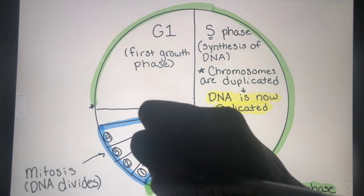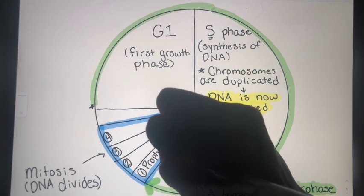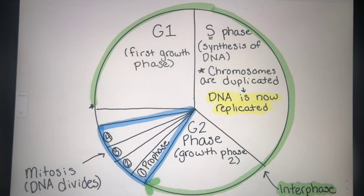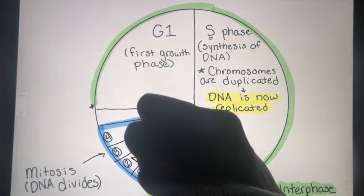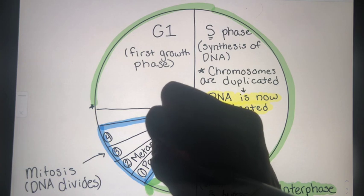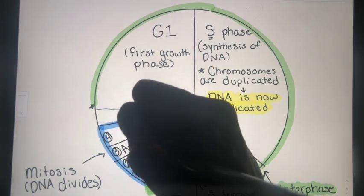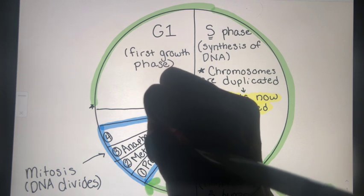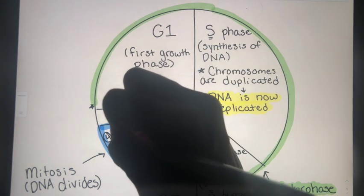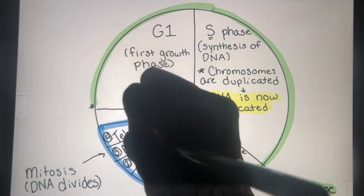The first one is called prophase. After prophase, you have metaphase. After metaphase is anaphase. And after anaphase, you have telophase.